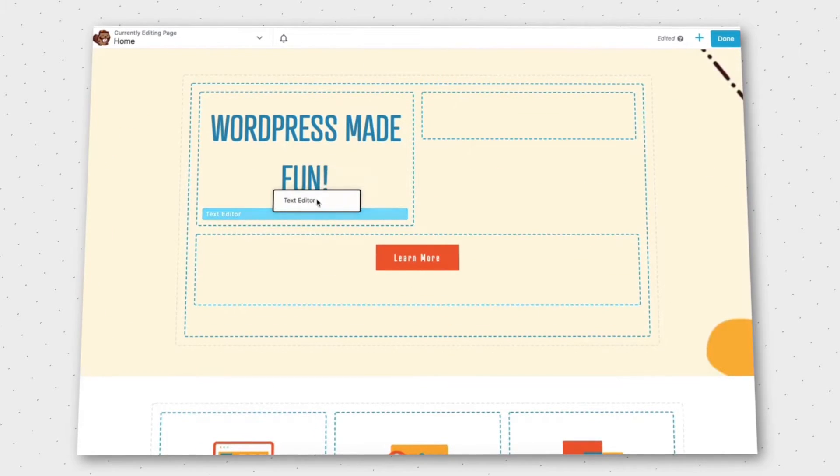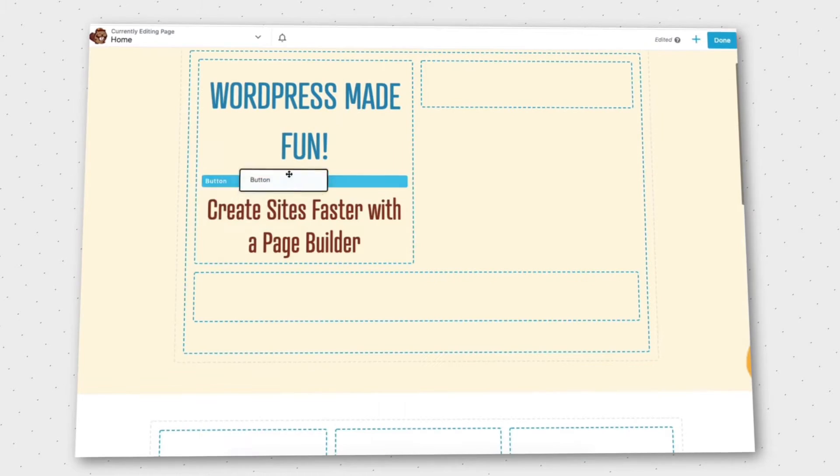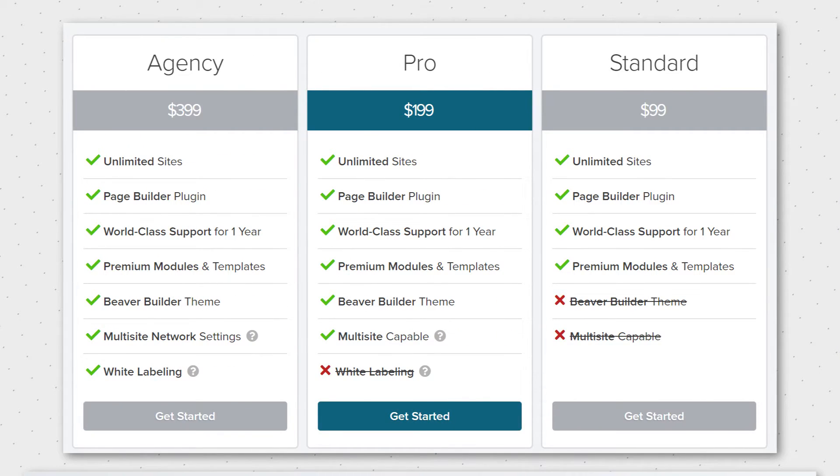One major con of Beaver is the cost-value ratio in terms of design. The agency plan, which includes white labeling and premium themes and modules, comes at $399, which is quite a lot considering that the Beaver's premium themes can't really compare to the premium themes of other providers.